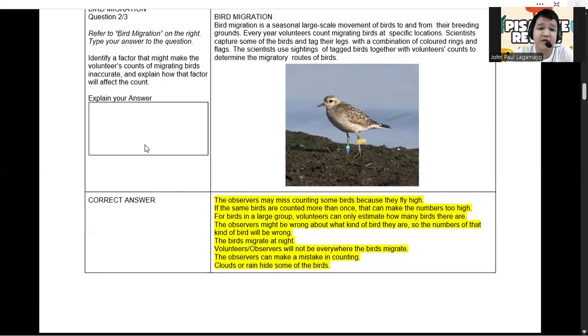So some of the several factors that may affect your answers here would involve the following. Number one: birds flying too high. When birds fly at high altitudes, they are harder to see. So observers may miss counting some of them, leading to an undercount. And number two: double counting the same birds. If volunteers accidentally count the same birds more than once, this can inflate the numbers, making the counts higher than the actual number of birds.